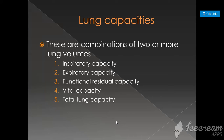Now we have five sub-topics: Inspiratory Capacity, which we call IC; Expiratory Capacity, which we call EC; FRC; Vital Capacity, VC; and Total Lung Capacity, TLC.